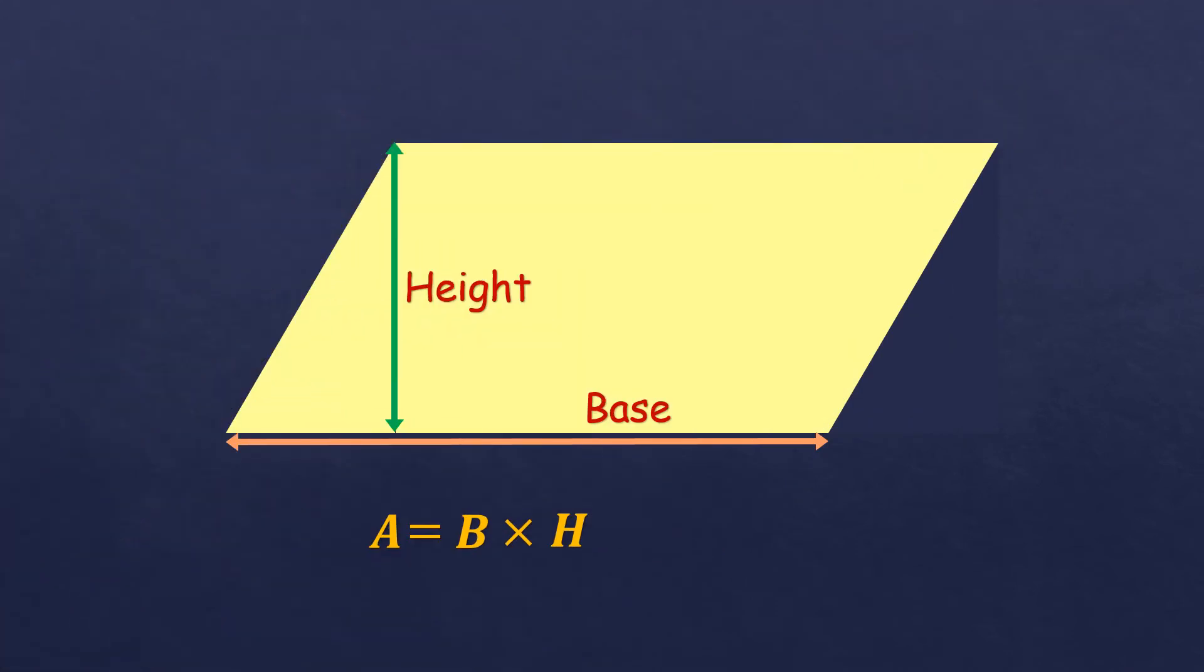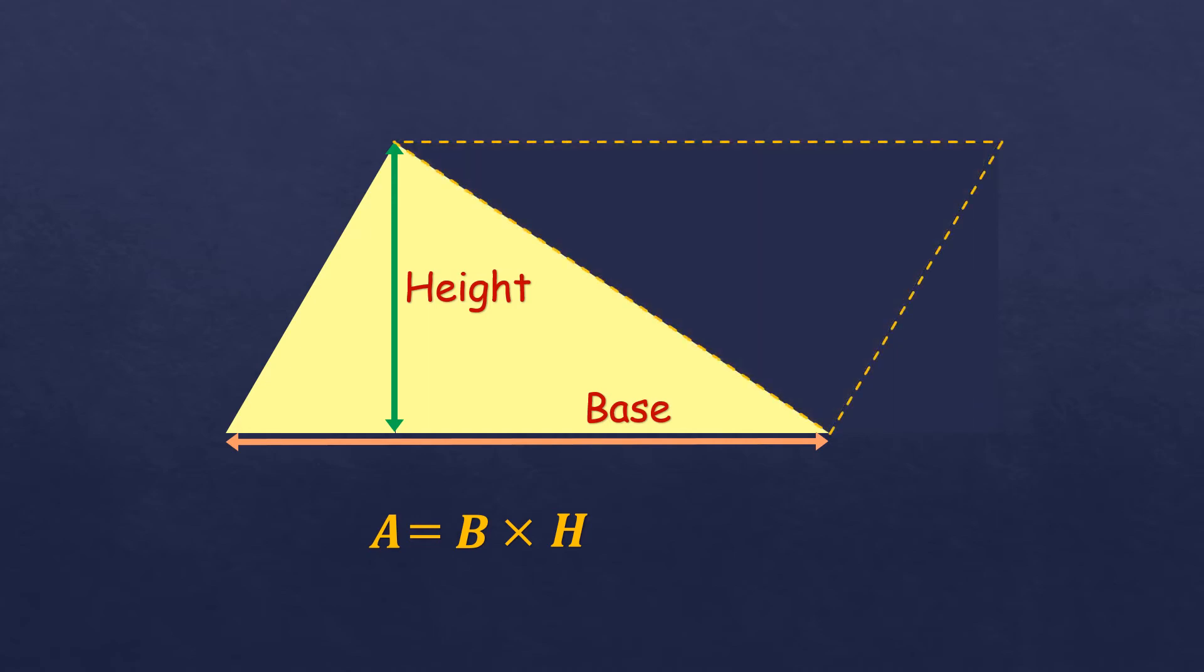This is the parallelogram, and if we take half of it like this, then we form a triangle. The triangle has the same labels as the parallelogram—the base, the height, as well as the measure. It's just that it's half of the parallelogram.